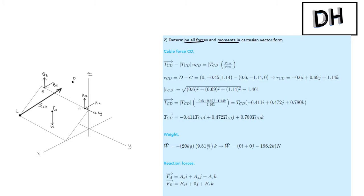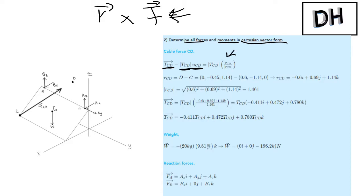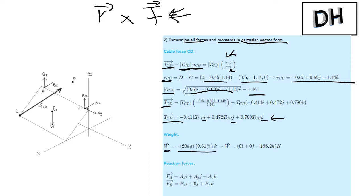Step two: we want to determine all the forces and moments in Cartesian vector form. This is so important — have your forces and moments in Cartesian vector form, because at the end of the day we're going to do R cross F, and F must be in Cartesian vector form. For TCD, we take the magnitude TCD times the unit vector. The unit vector uses the position vector from C to D. Find that position vector, take the magnitude of RCD, which comes out to 1.461, and solve for TCD in Cartesian vector form — I, J, K components. The weight is 20 kg acting downward, so it's negative in the K direction: zero I, zero J, minus 196.2 K.